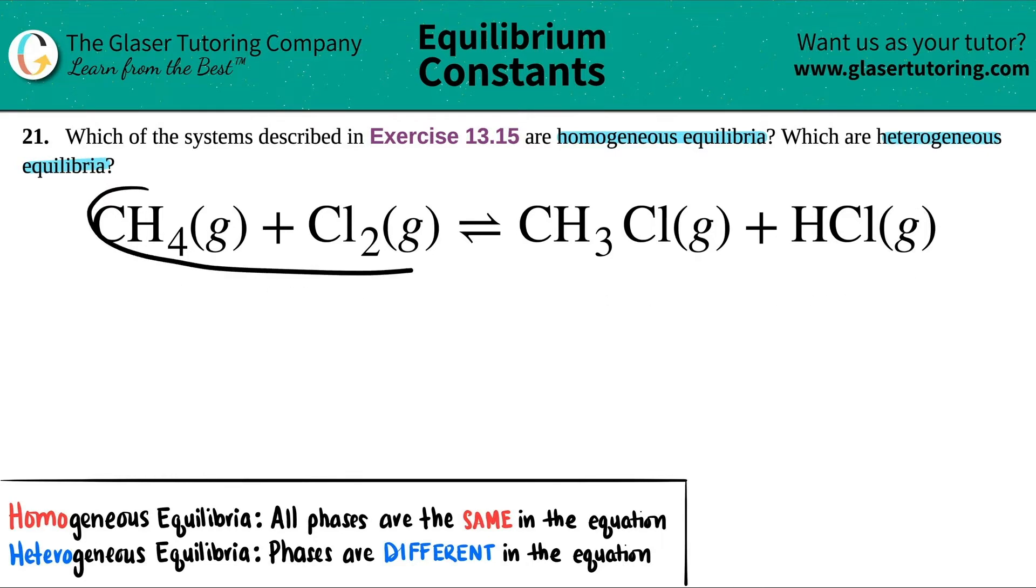We have to figure out if CH4 plus Cl2, both are gases, they come in equilibrium with CH3Cl gas plus HCl gas. Is this homogeneous or heterogeneous equilibria?